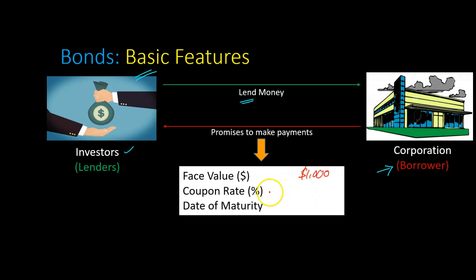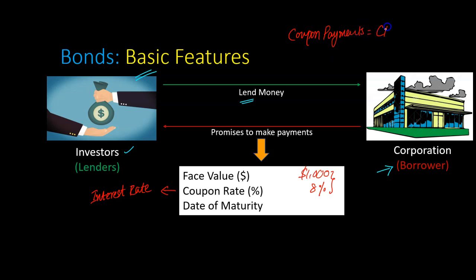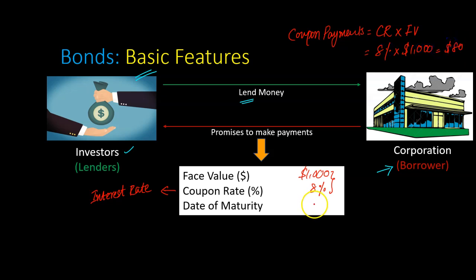The other thing that is specified in a bond is the coupon rate. At a very high level, you can think of this as the interest rate that the corporation is promising to pay to the investors or the lenders. Let's suppose this is 8%. The coupon rate and the face value combined determine the magnitude of what are referred to as the coupon payments, or the interest payments. Coupon payments = coupon rate (CR) × face value (FV). So 8% × $1,000 = $80.